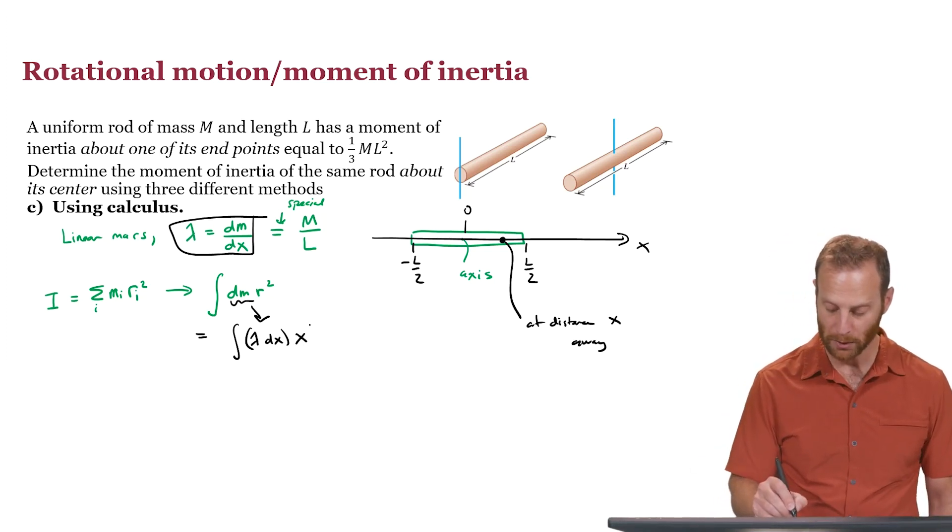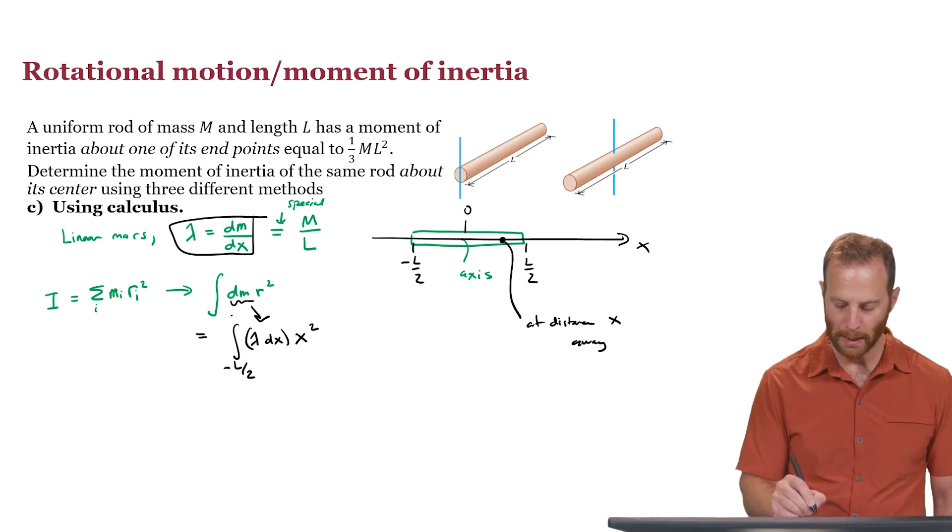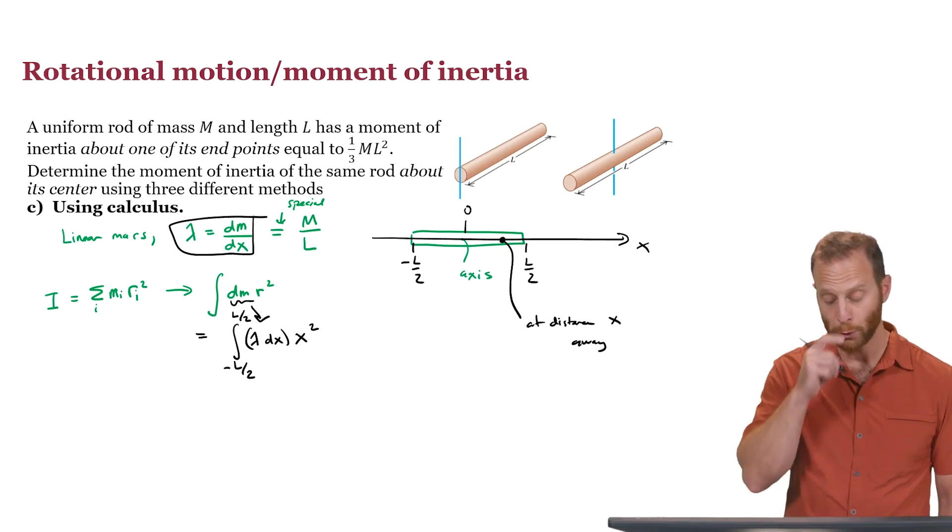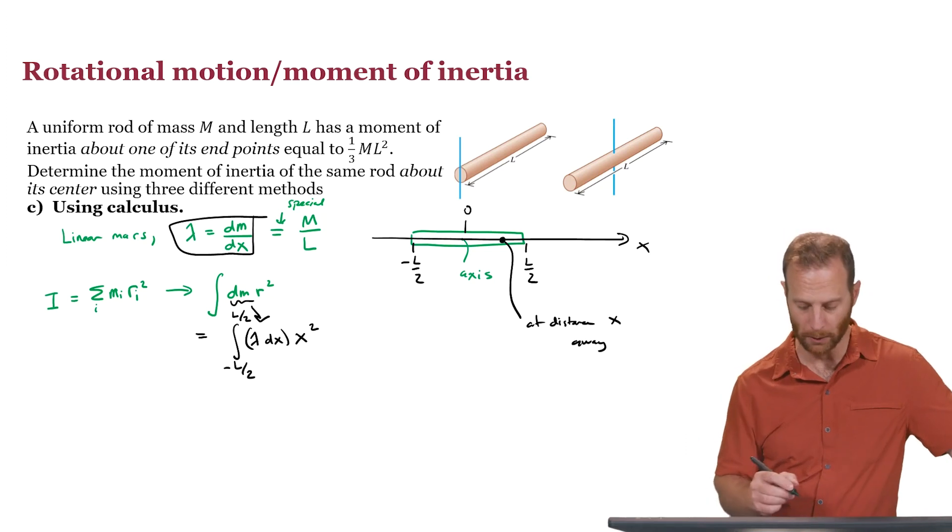r, the distance away, is simply x, it's x squared, and what are my limits of integration? I'm starting at minus l over 2 and ending at l over 2. So everything is there and ready to go, and now it's just a matter of doing the calculus.